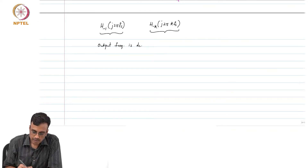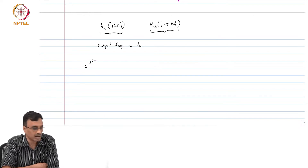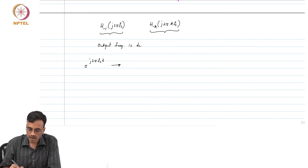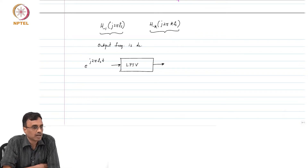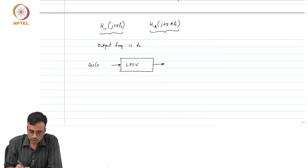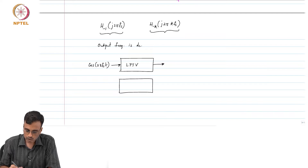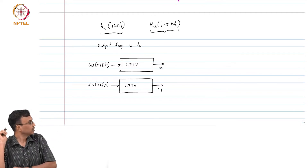I will do it for k = −1 and then you can generalize. If you put e^{j2πfs·t} into this LPTV system, what do you get at the output? Our standard approach is to excite with cos(2πfs·t) and sin(2πfs·t), get W_i and W_q, and do all the math. So what is W_i now?